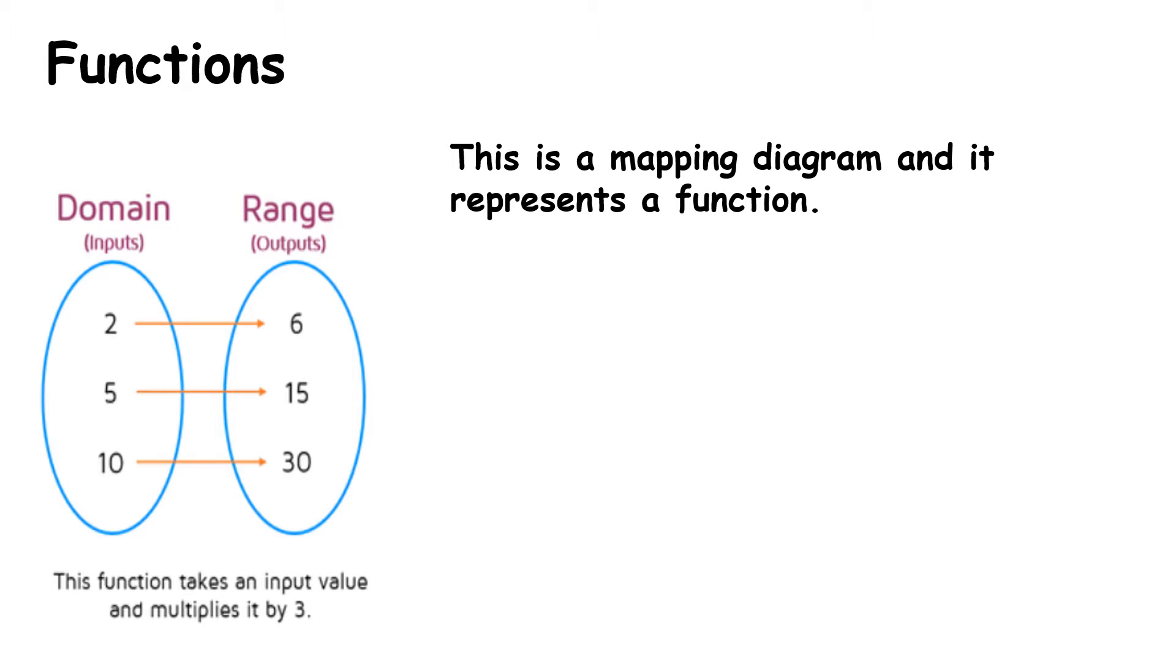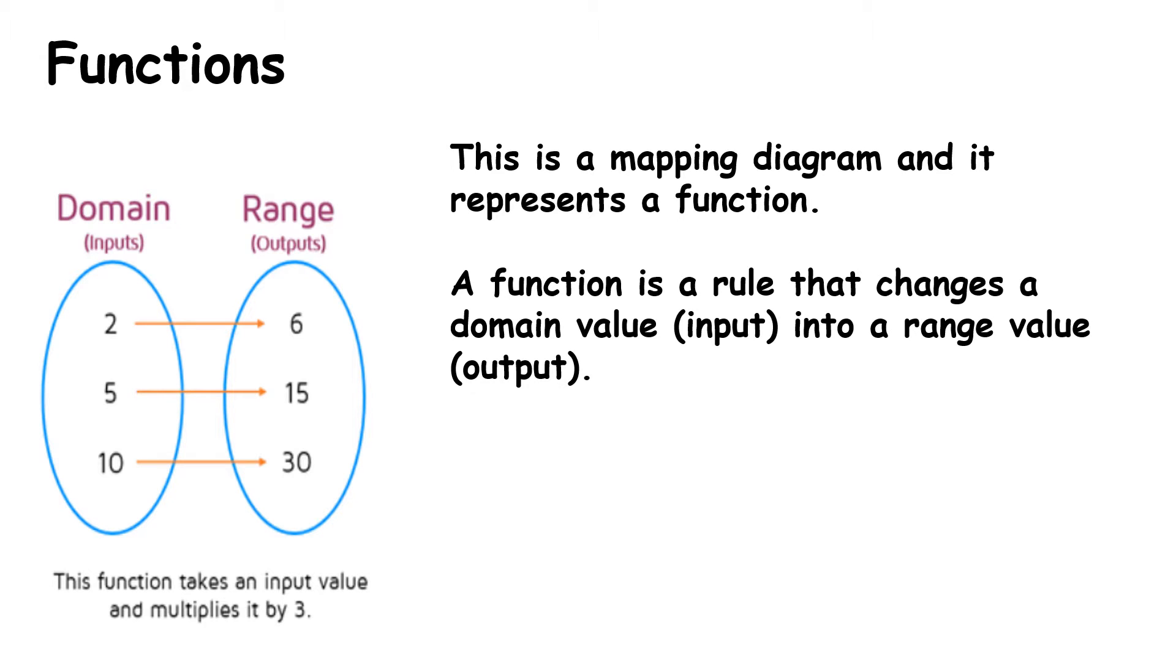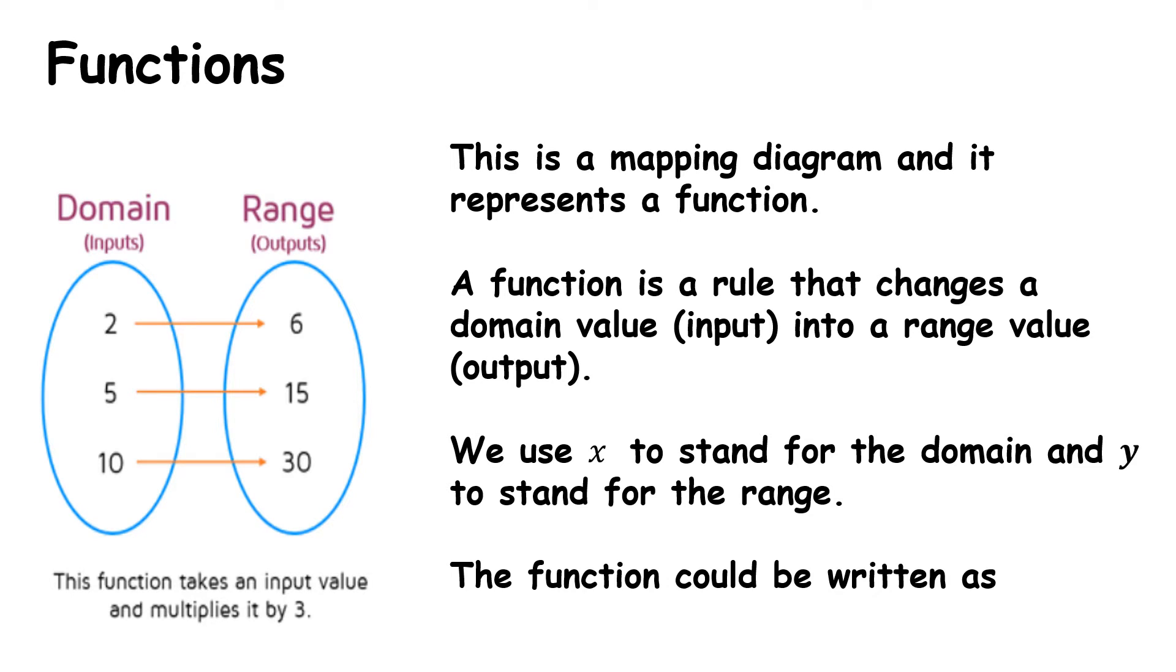This is a mapping diagram, and it represents the function that we've just been talking about. A function is a rule that changes the domain value or an input value into a range value. We use the letter X to stand for domain, and Y to stand for the range, and this will work as we move forward into seeing them on a coordinate plane, similar to that used when we're dealing with coordinate geometry of the line. Our function can be written as Y equals 3 times X, or f(x) is equal to 3X. We'll talk about function notation in more detail in a later slide.